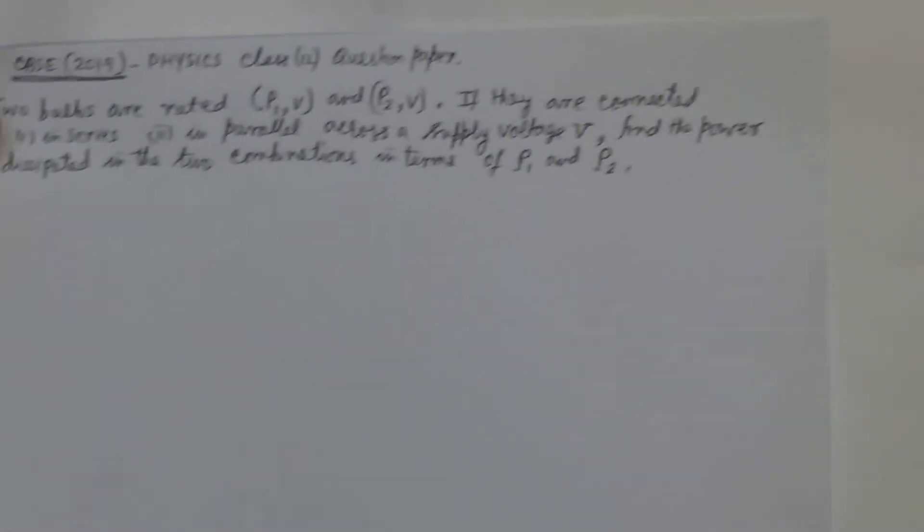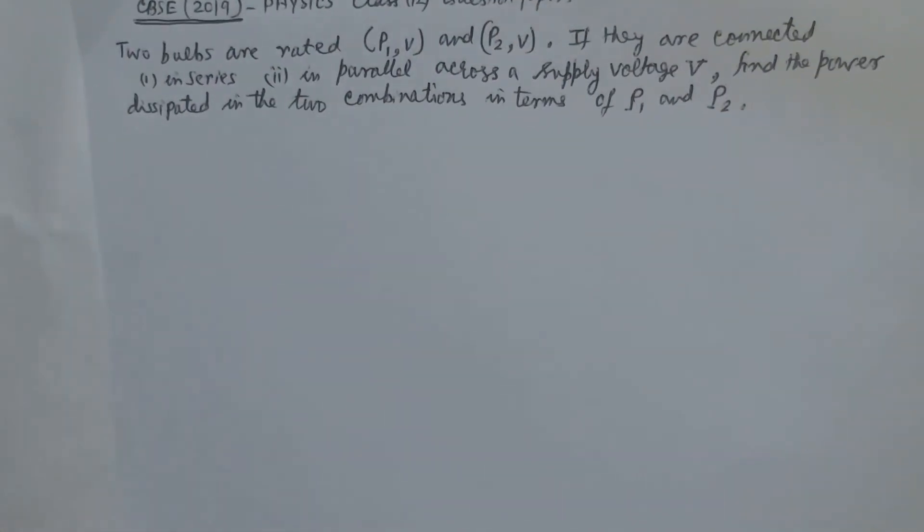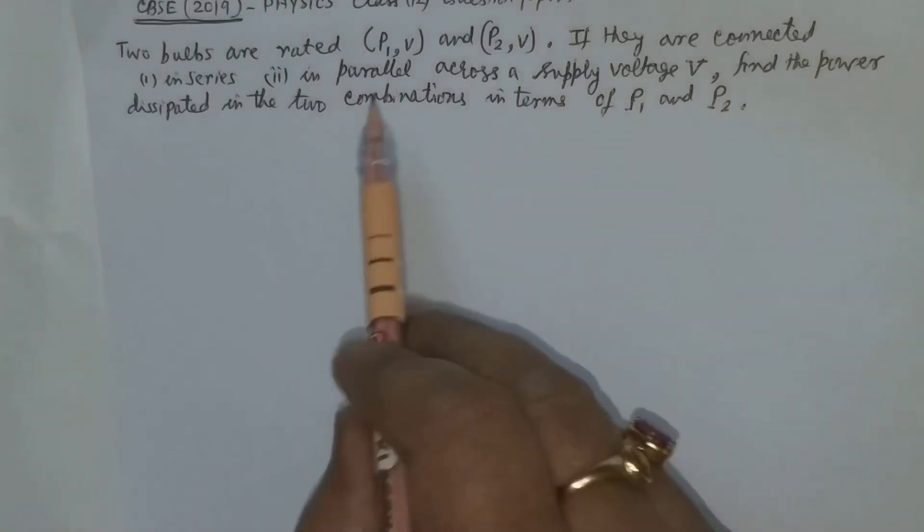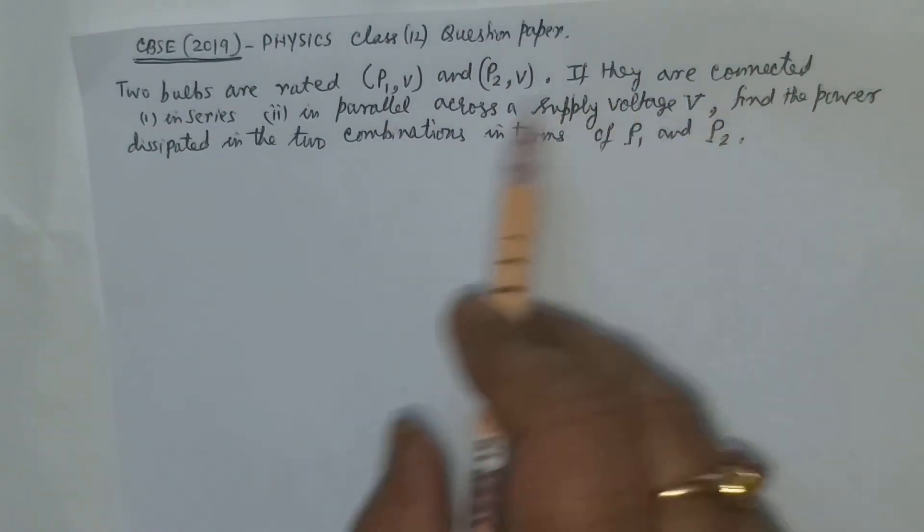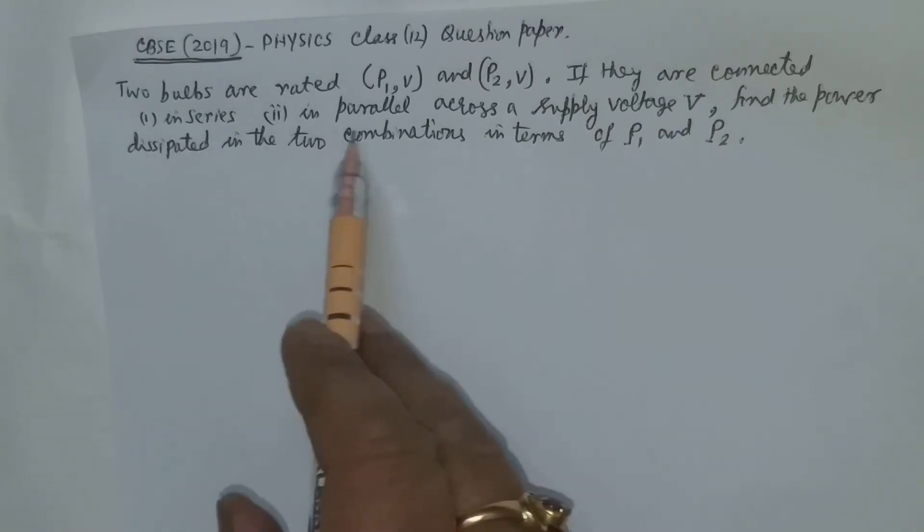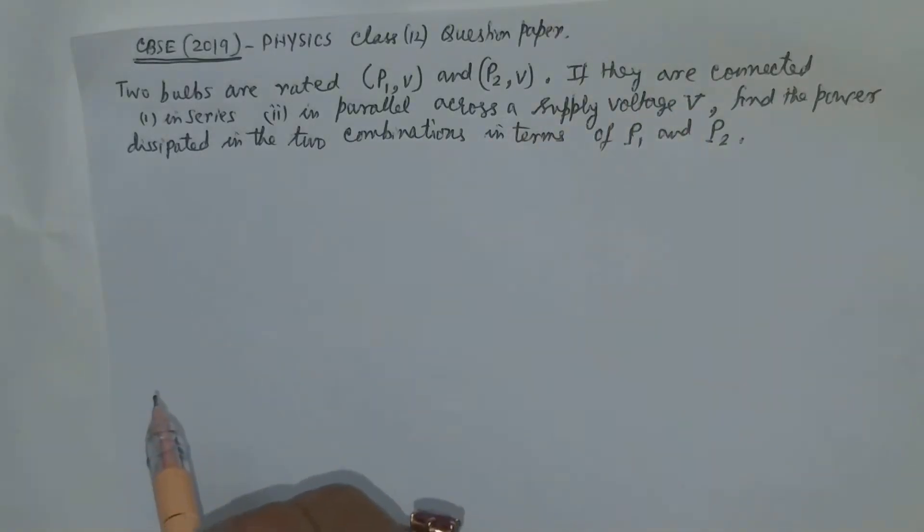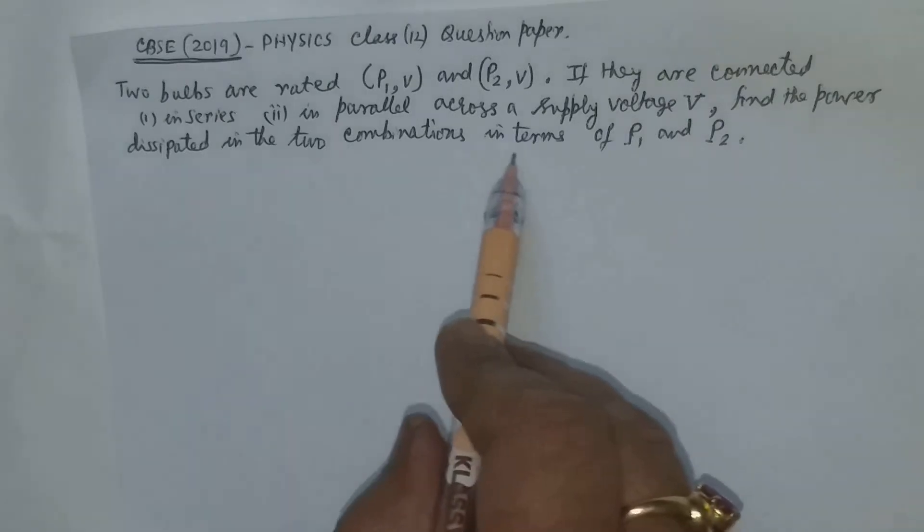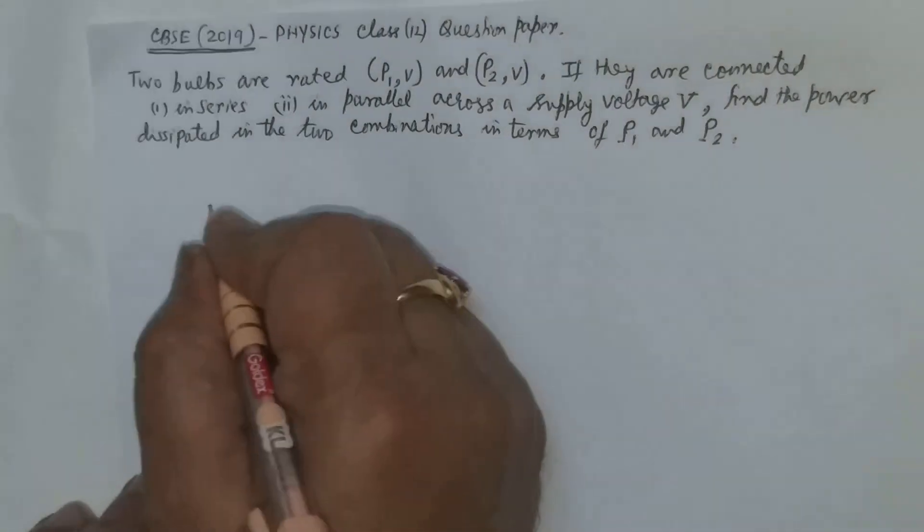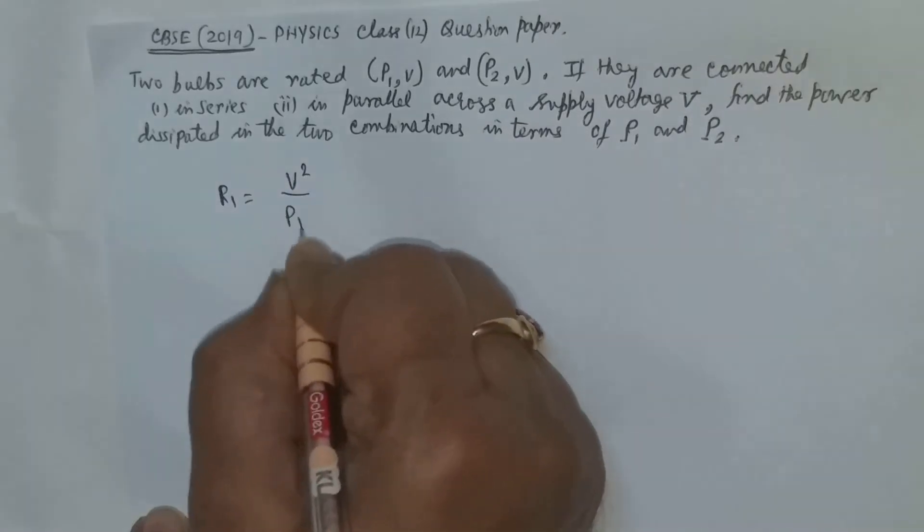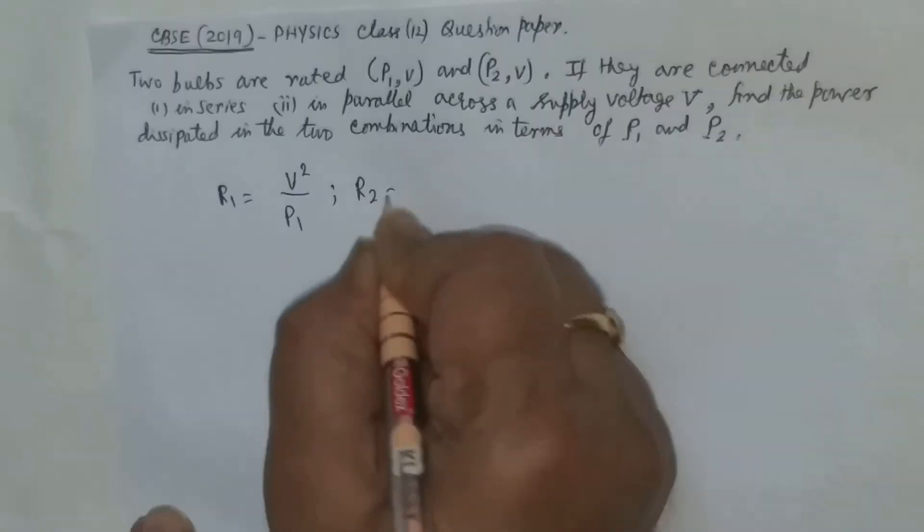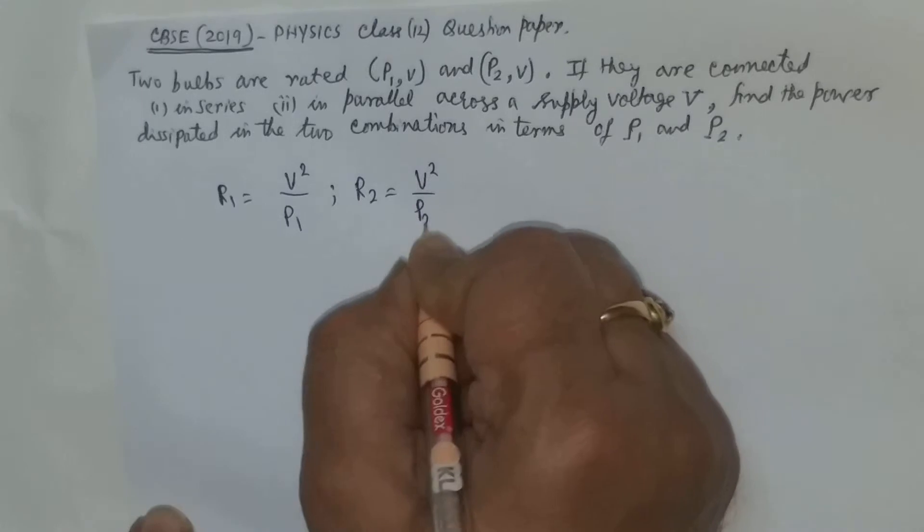The other question follows: Two bulbs are rated P1 and rated voltage V, and P2 and rated voltage V. Now they are connected first in series and in parallel across a supply voltage of V, and we have to find the power dissipated in the two combinations in terms of P1 and P2. So what is the resistance of the first glowing bulb? It will be V² by power P1. Resistance of the second will be V² by power P2.